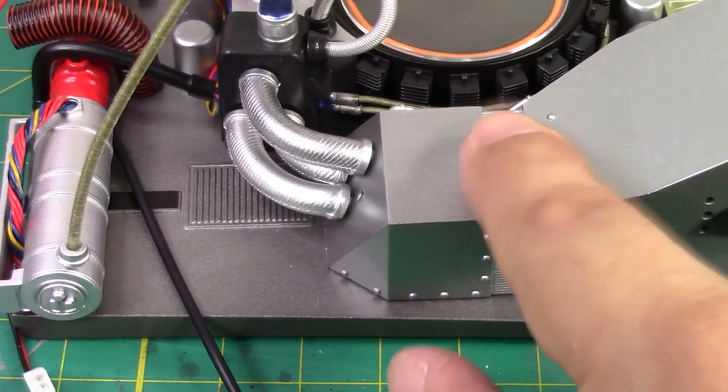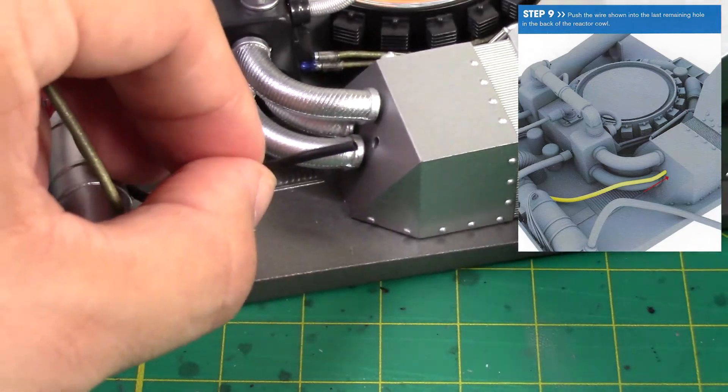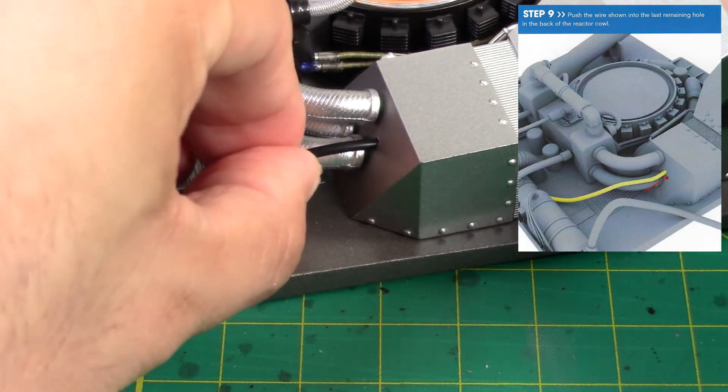And once we have that screwed in place, we do have this black hole piece that's going to go right onto the other remaining hole right in the back there.